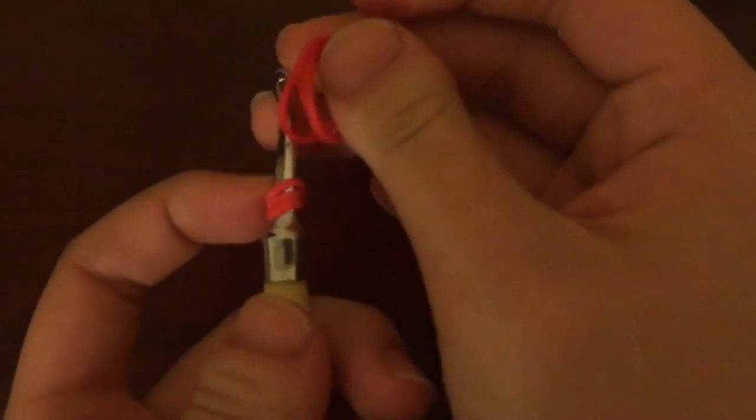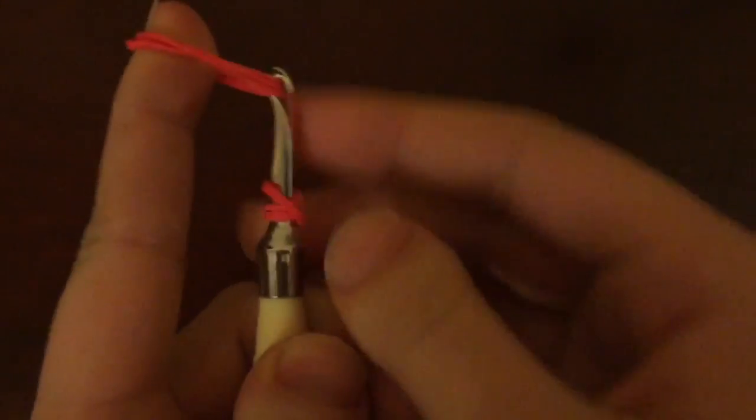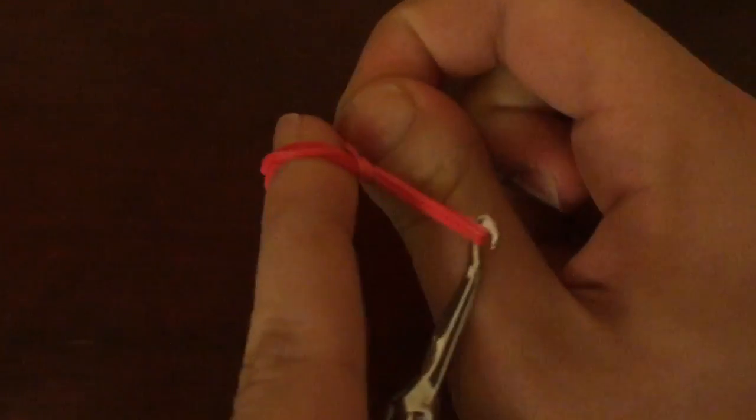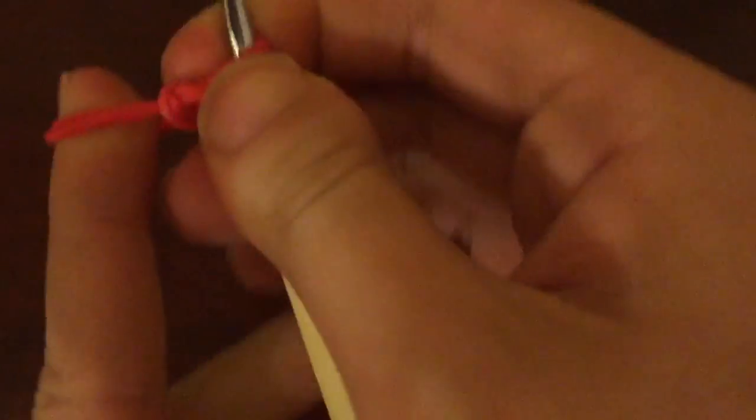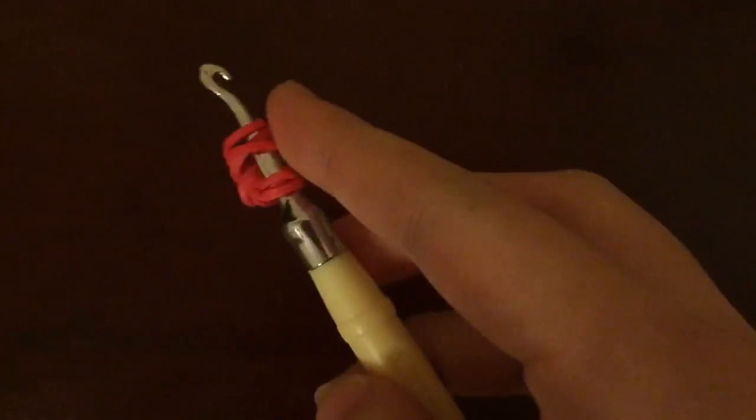Now grab 3 red rubber bands and I'm going to be placing them on my hook, just like that. I'm going to be sliding the set of loops over it and I'm going to be placing the open end here onto the hook, just like that.